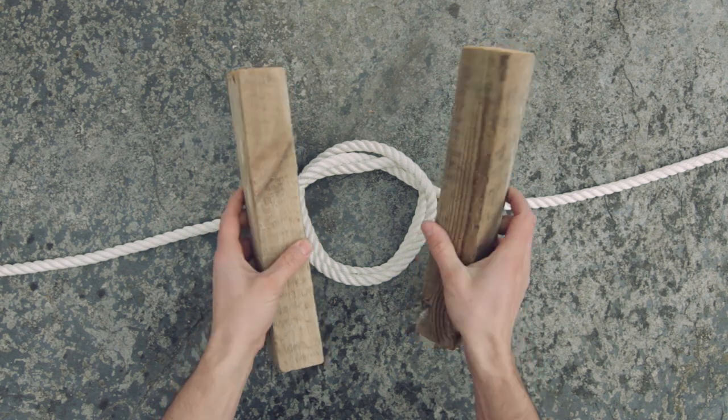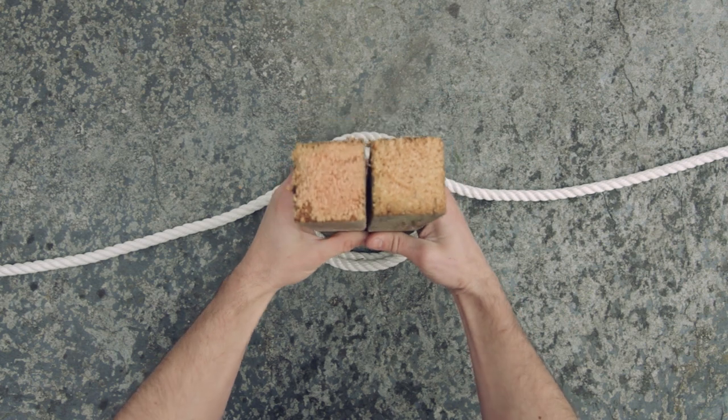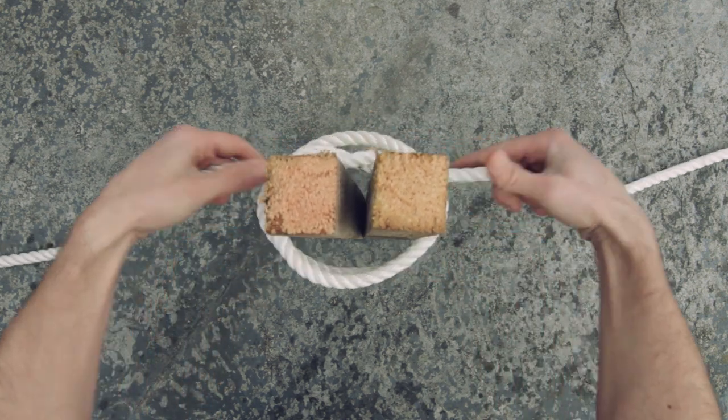Now I'm going to take my two blocks here and place them between the constrictor knot, lift it up and tighten.